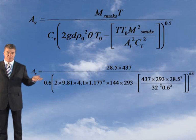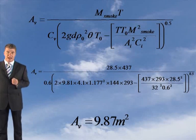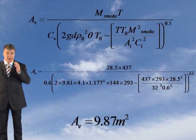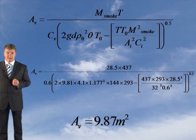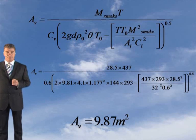When you put in your known variables, you should have got an AV requirement of 9.87 square meters. So you need 9.87 square meters of geometric area based on a coefficient of 0.6.